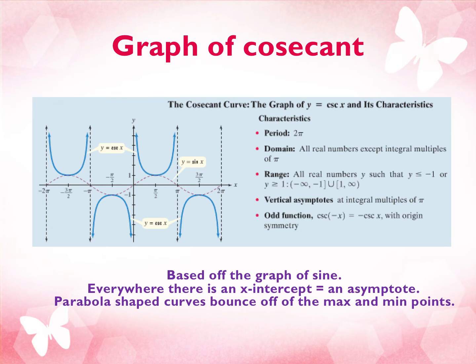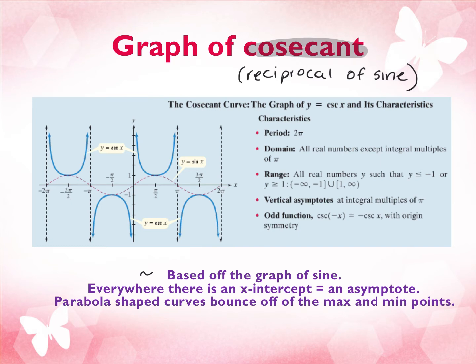We're going to do secant and cosecant. Cosecant is the reciprocal of sine, so we actually use sine — we plot the curve as though it's sine. We graph the exact same way we've already done it using the sine curve. Then everywhere there's an x-intercept, we plot an asymptote, because if it was an intercept, that means it's a zero, and if I flip it, that is now undefined, and that creates an asymptote. Then we do these parabola-shaped curves to bounce off the max and the min points.